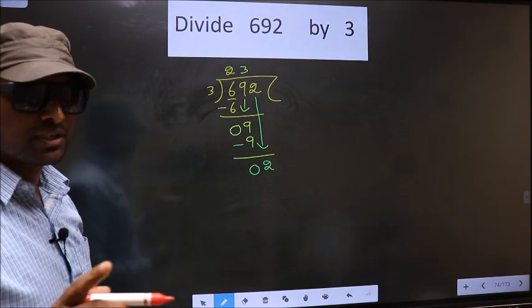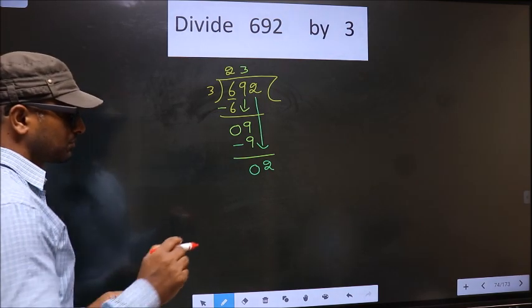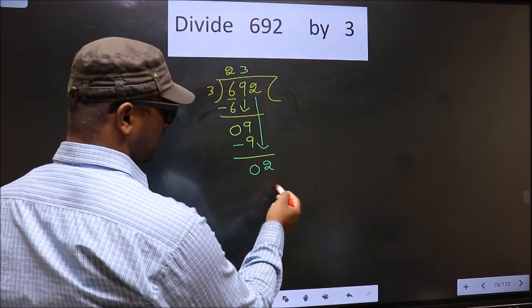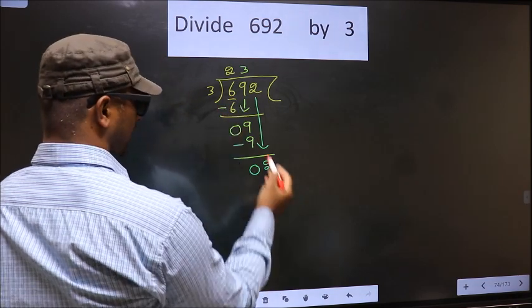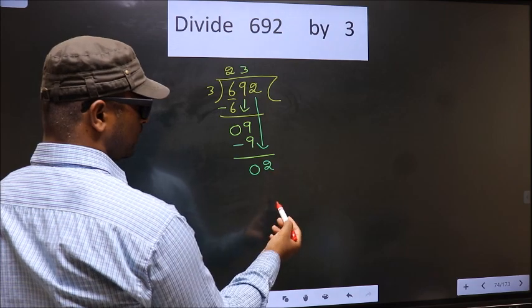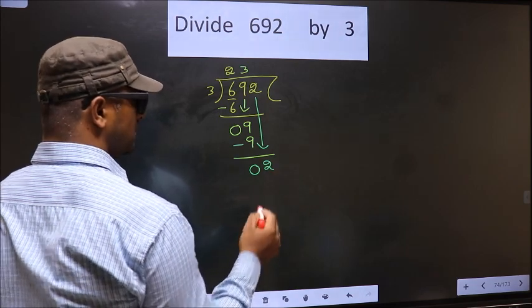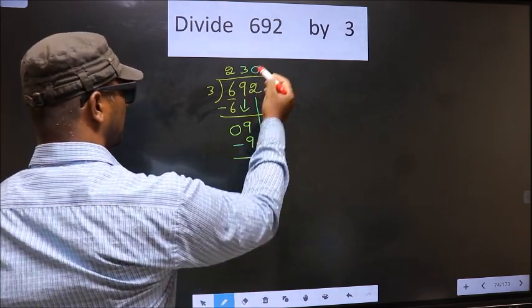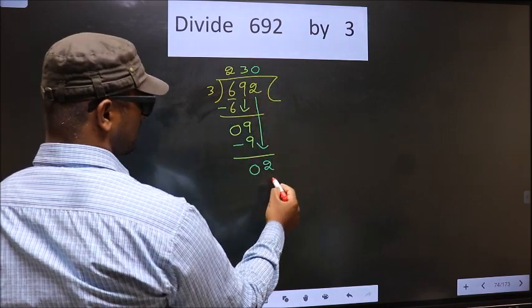Instead, what you should think of is, what number should we write here? If we write 3 here, that is larger than 2. So, what we do is, we take 0 here. So, 3 into 0, 0.